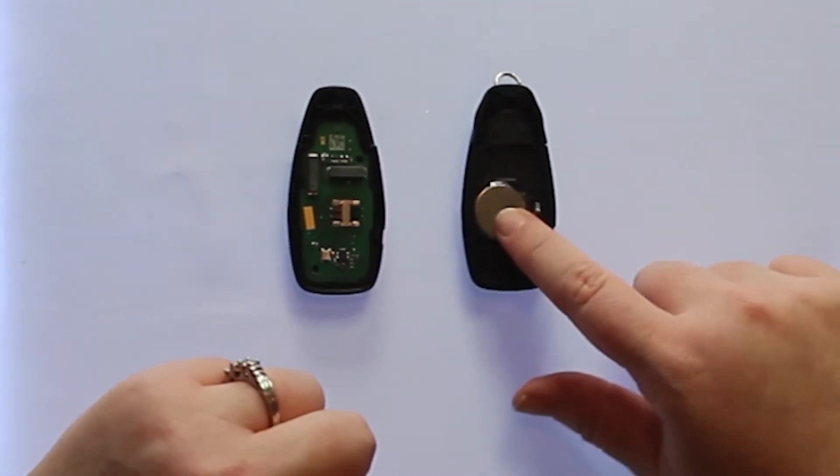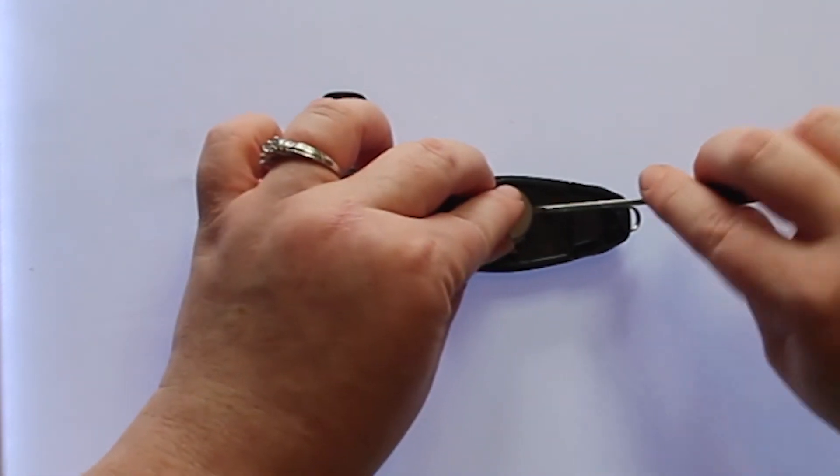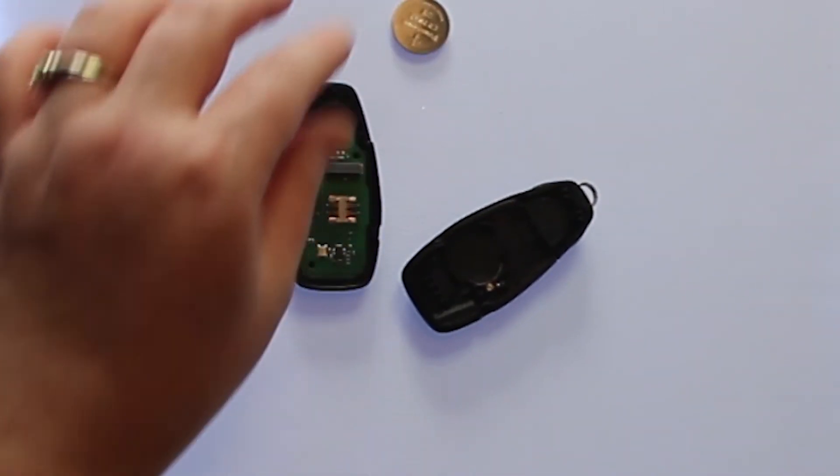Once you have the key fob open, you'll see the battery is located here. You can use that small flathead screwdriver again to help pop the old battery out.